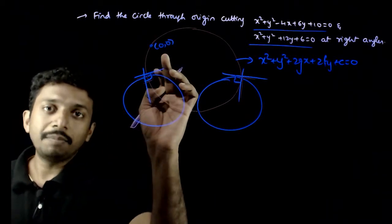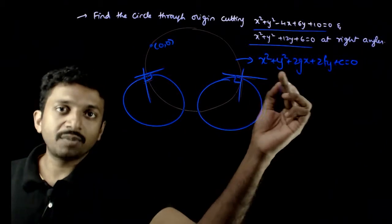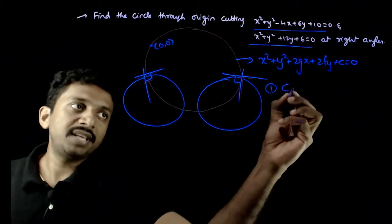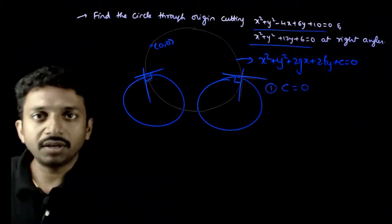So, first, let us make this circle pass through origin. If we assume the circle is passing through origin, we substitute 0, 0. So, c will be equal to 0.